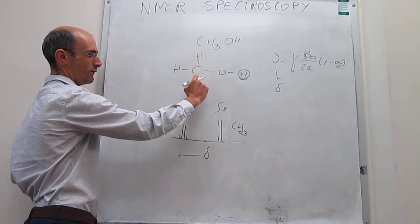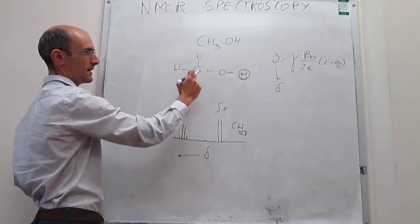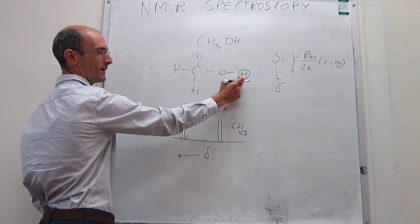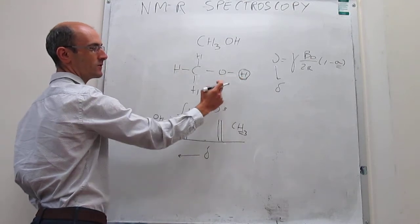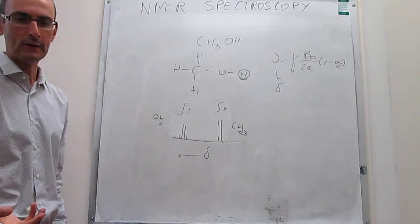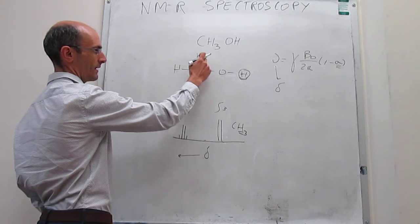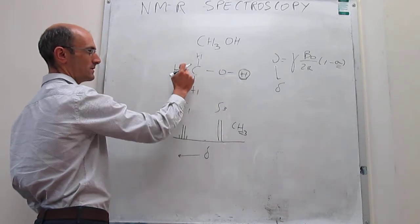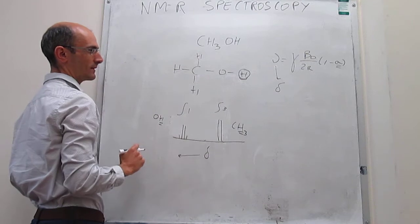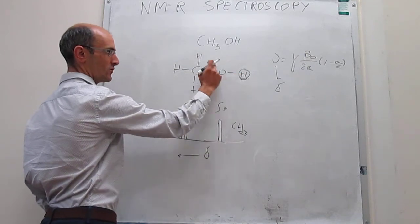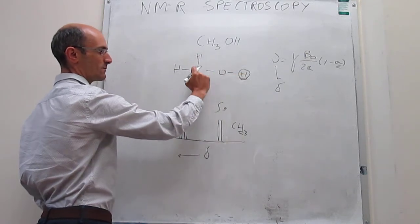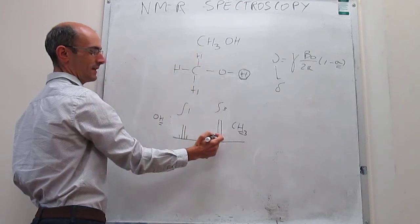Analogously, when we actually take a look at the signal for these three protons, what happens is that that signal is split by the presence of an NMR active nucleus that is within three bonds of that signal. So we have that this proton is going to be within one, two, three bonds of each one of these NMR active nuclei. And this proton is going to split the signal of these CH3s into a doublet.